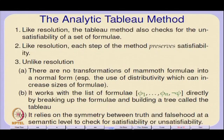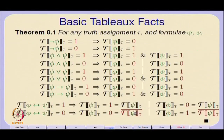The tableau method relies on a certain symmetry between truth and falsehood at a semantic level, and so certain versions of the analytic tableau are also called semantic tableau because of this reason. There are some differences between a semantic tableau and an analytic tableau which we will come to later. Essentially at a semantic level you rely on the symmetry between truth and falsehood to check for satisfiability or unsatisfiability.